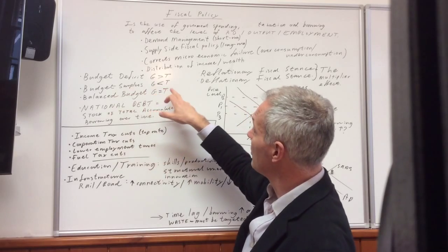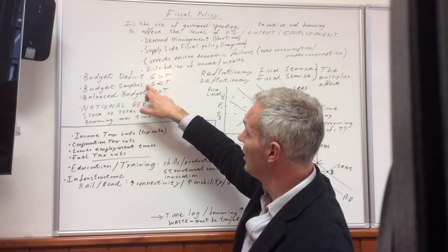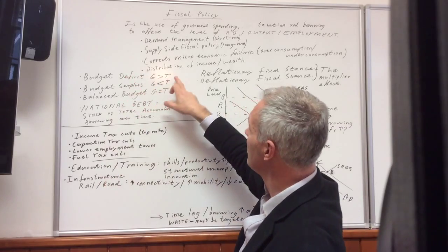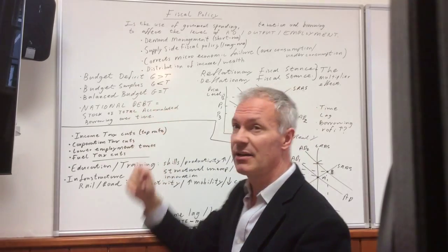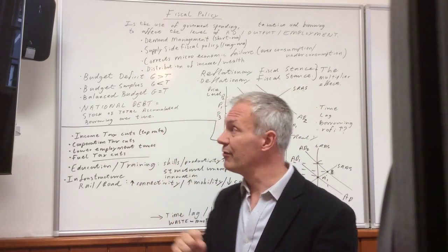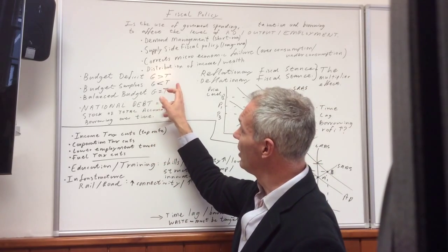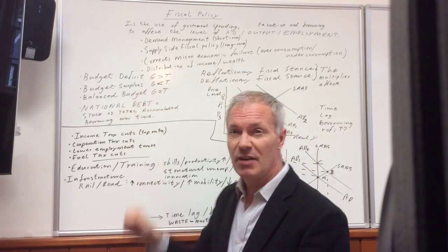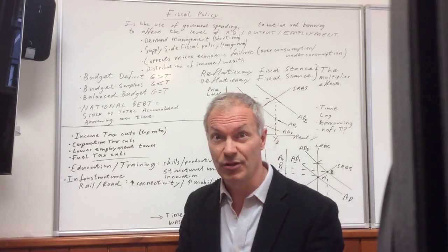A budget surplus is when you have tax revenue greater than government expenditure. A budget deficit is when tax revenue is less than government expenditure. And indeed, a balanced budget is when they're both equal. Now, if you look at history, you will find that governments don't particularly often have budget surplus. They tend to have budget deficits. So, they're like a strong gin and tonic.